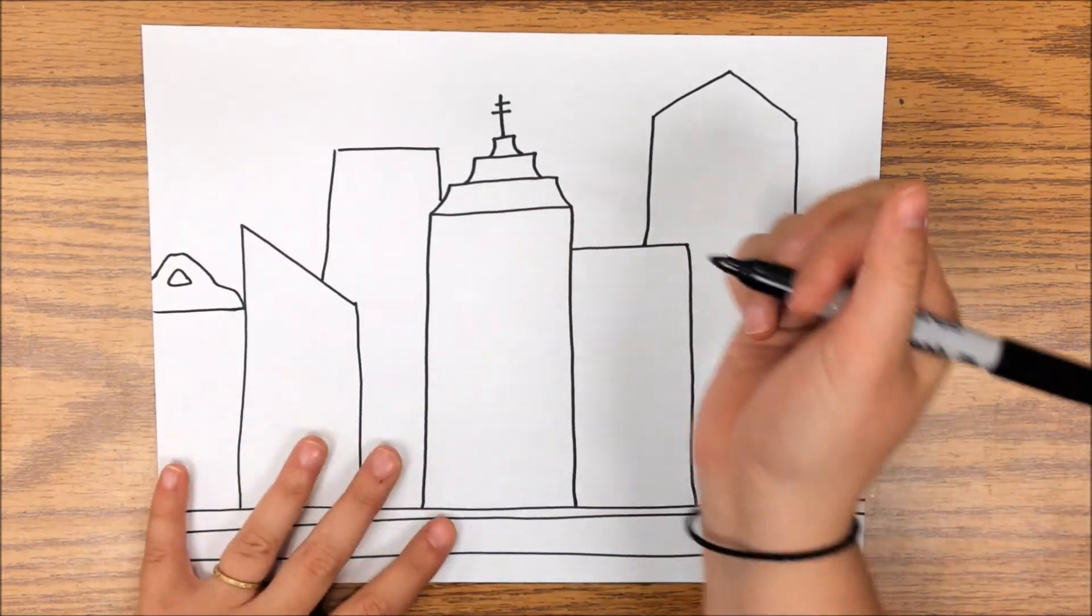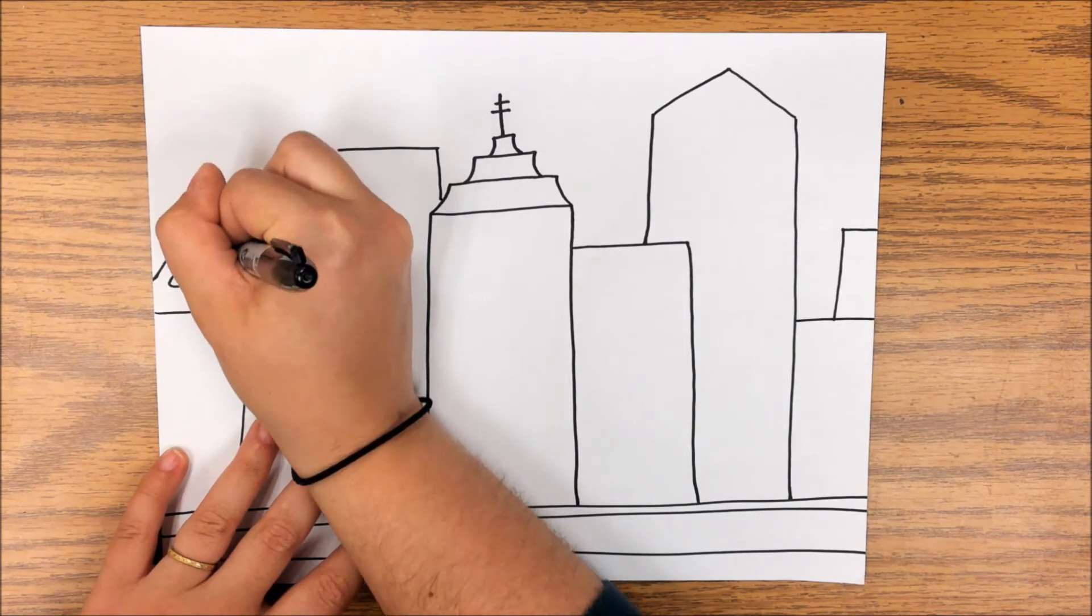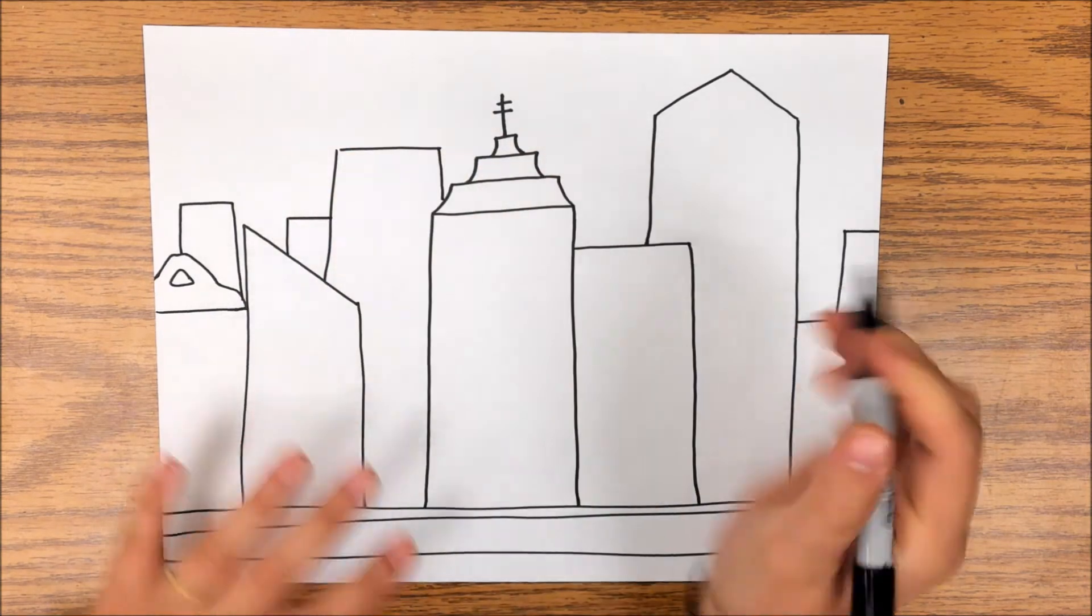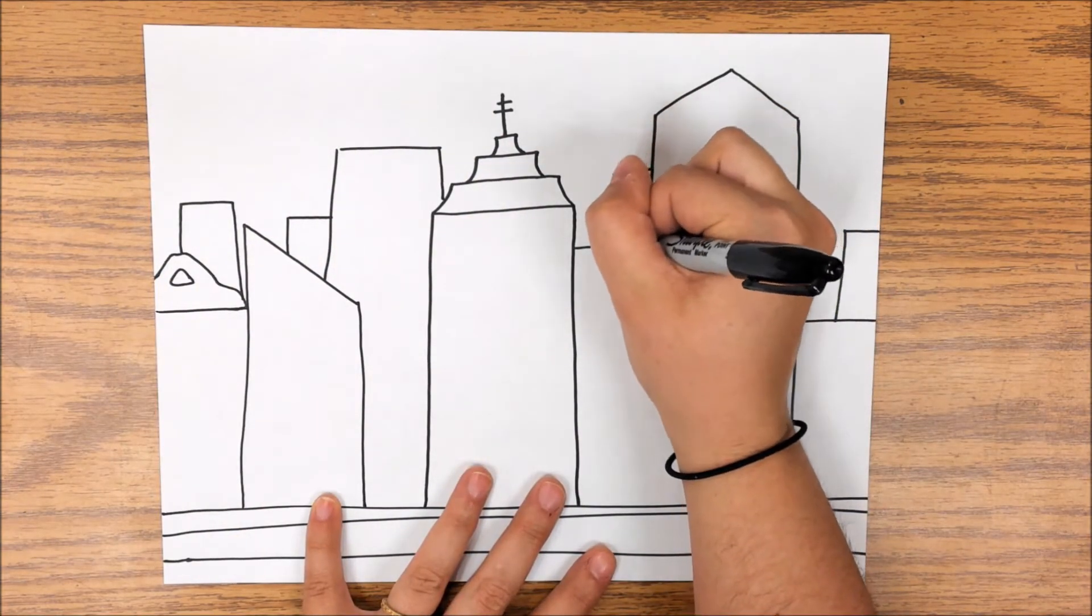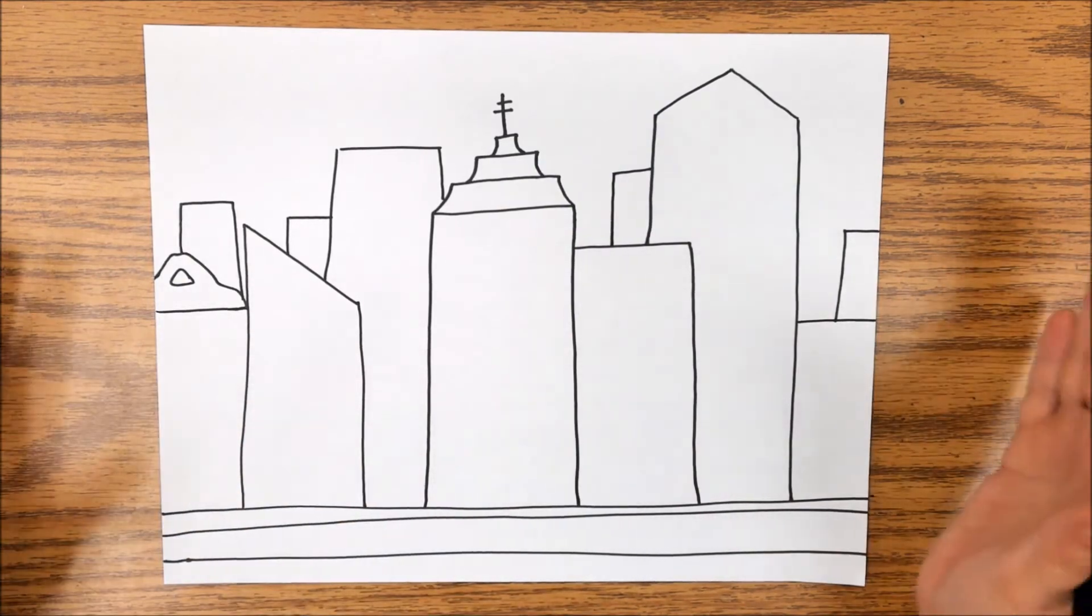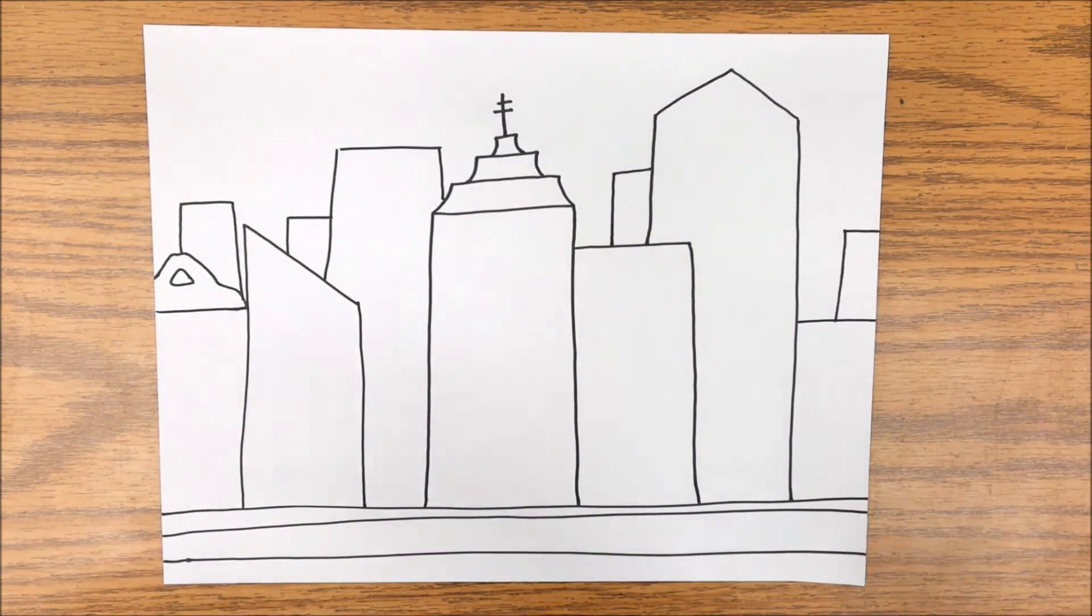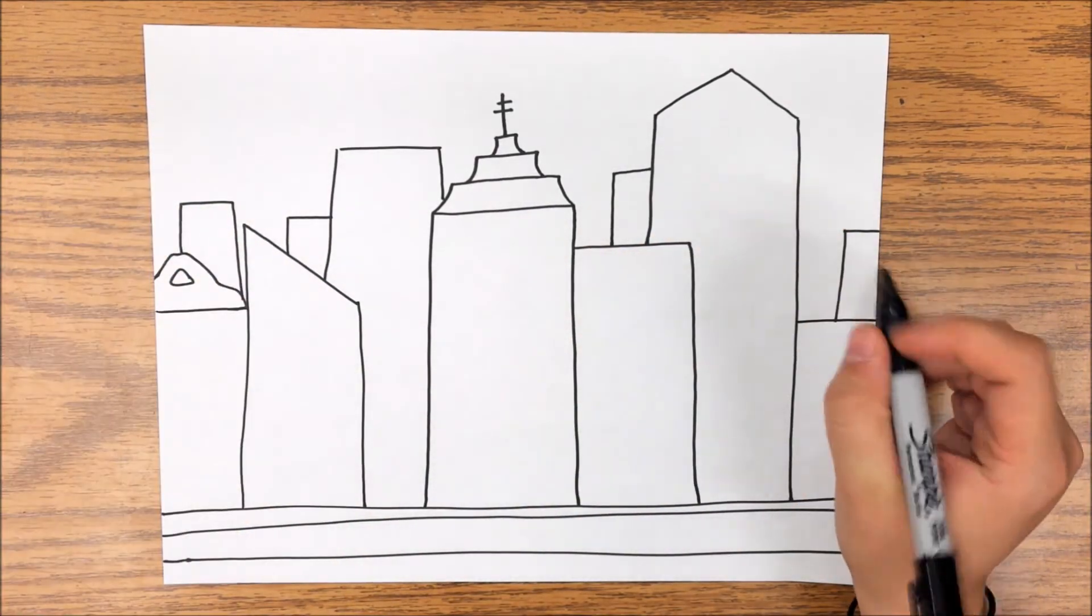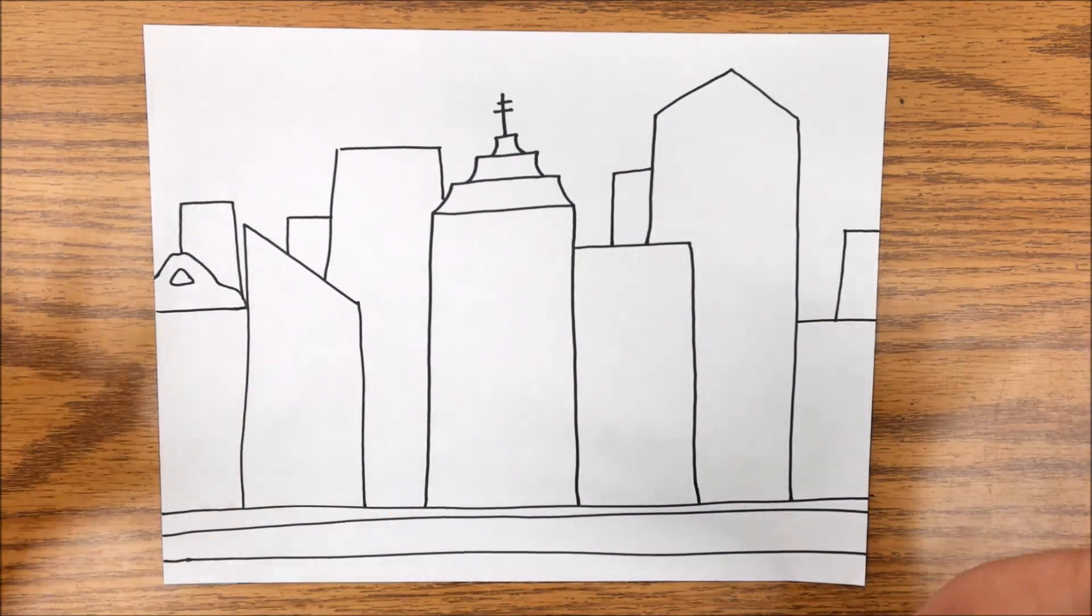So once you have a lot of buildings in your background, I'm going to draw another one sticking up way in the distance here. Once you have a lot of buildings added to your picture, the next thing we're going to do is we're going to go in and start drawing all of our other architectural elements, so things like windows, doors, all of that.